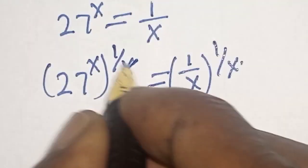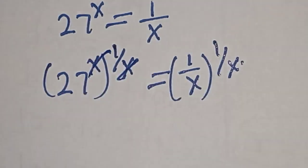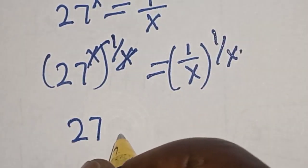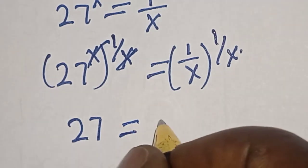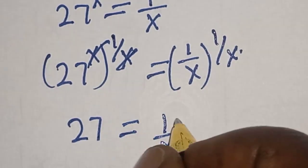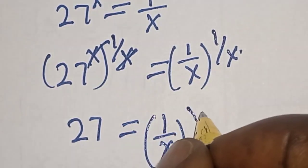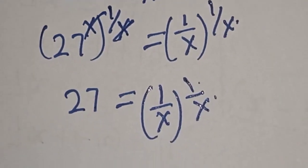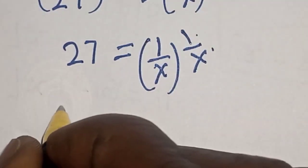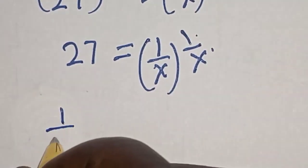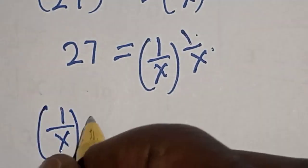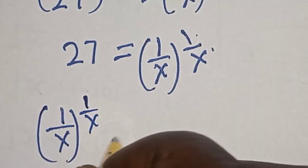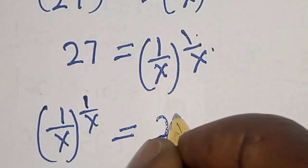Then, as we cancel this, we'll have 27 is equal to 1 divided by x raised to power 1 divided by x. Now let's rearrange. We'll have 1 divided by x raised to power 1 divided by x is equal to 27.